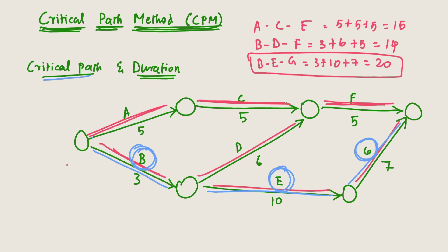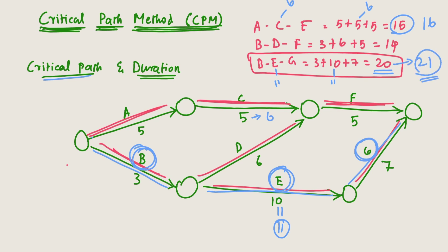For example, if we take activity C as 6 days, the total duration of that path becomes 16, but the project still completes after 20 days, so the delay in C does not affect the project. However, if we substitute activity E as 11 days, the total duration of B-E-G becomes 21 days, meaning the project completion duration becomes 21 days. That's why B-E-G is the critical path.